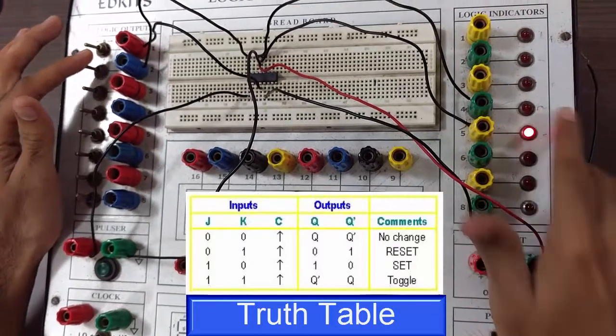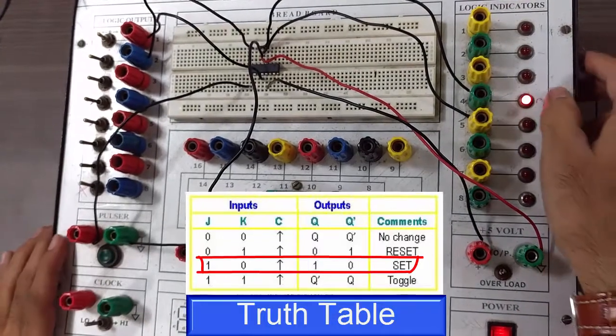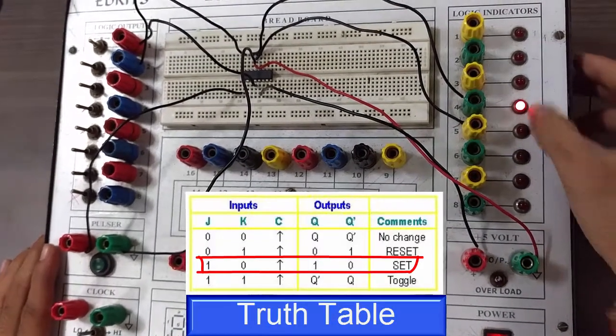As you can see for J0 and K0, Qn bar is 1 and Qn is 0. If you make J as 1 and give a clock pulse, you will find that Qn is 1 and Qn bar is 0.